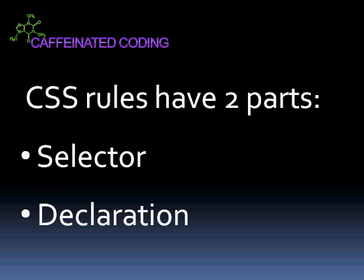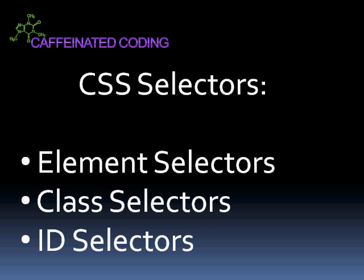Let's take a look at the selector first. There are several different kinds of selectors. The most basic type of selector is the HTML element itself. This allows you to easily apply a set of rules to a certain element type all at once. Let's go ahead and look at an example of this.